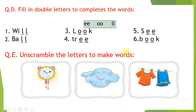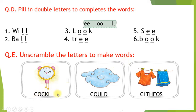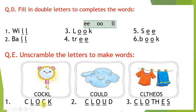Unscramble the letters to make words. Words ko unscramble karna hai, words banana hai. First one: block. Second is: cloud. And third is: clothes.